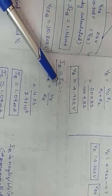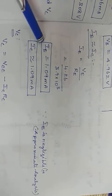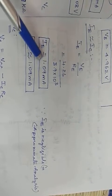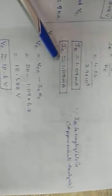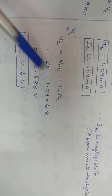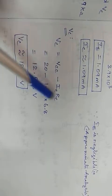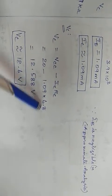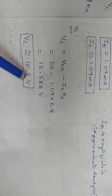IE ≈ IC for approximate analysis. IE = VE / RE. Substituting the values, IE = 1.09 milliamps, which means IC = 1.09 milliamps as well. Then VC = VCC − IC × RC. VCC = 20V, IC = 1.09mA, RC = 6.8kΩ. After simplifying, VC = 12.6V.